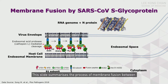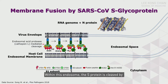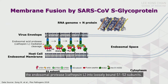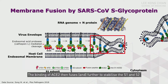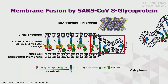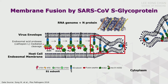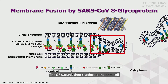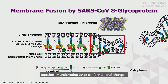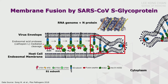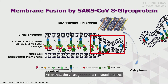This slide summarizes the process of membrane fusion between the virus and the endosome after endocytosis. Within the endosome, the S protein is cleaved by endosomal proteases into loosely bound S1 and S2 subunit dimers. ACE2 binding further stabilizes S1 and S2 and induces conformational changes from pre- to post-fusion state of the S2 subunit. The S2 subunit then reaches toward the host cell endosome membrane and brings the two membranes close together through large conformational changes, initiating membrane fusion. After that, the virus genome is released into the cytoplasmic environment to start replication and transcription.